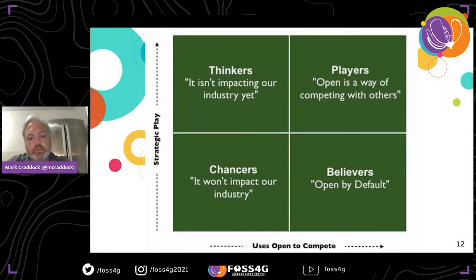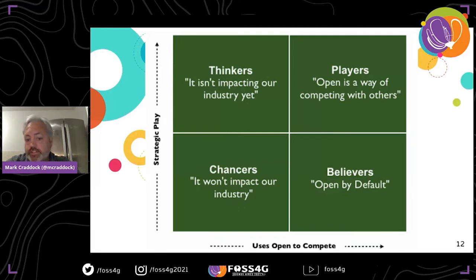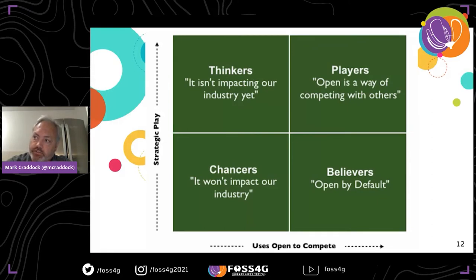When thinking about open source in competition and strategic plays, we have four areas: thinkers, players, chances, and believers. In the bottom left, the chances — they won't impact our industry, they don't understand it, they'll just wait and see. Then the thinkers — it isn't impacting our industry yet, so they watch and do nothing. There's no strategic play in either of these. On the right, the believers — most people attending FOSS4G will be believers. They'll be open by default, but not through any strategic decisions.